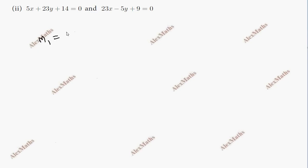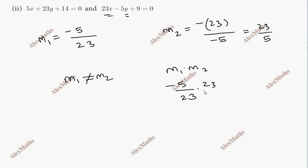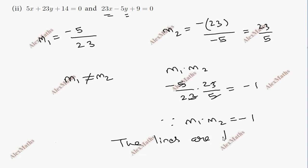Following the formula, m1 equal to minus a by b gives minus 5 by 23. Second line slope: a is 23, b is minus 5 — that is the x-coefficient and y-coefficient. So m2 equals minus 23 by 5, and the negatives cancel to give 23 by 5. If m1 equal to m2, it would be parallel, but checking the other condition: m1 into m2 equals minus 5 by 23 into 23 by 5. Cancelling on the slope, the answer is minus 1. Since the product of slopes m1 into m2 equals minus 1, the lines are perpendicular.